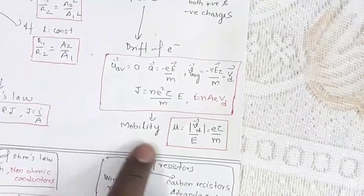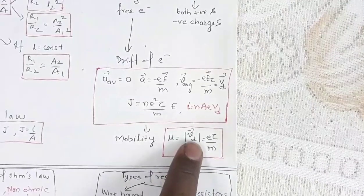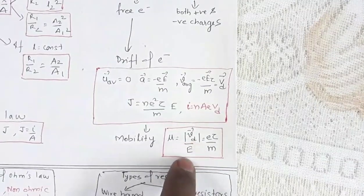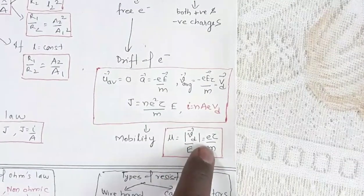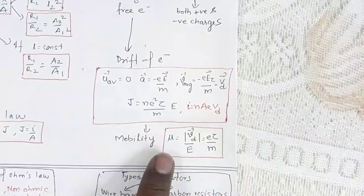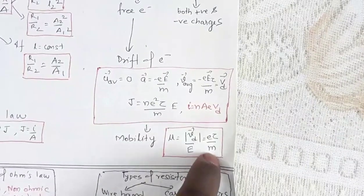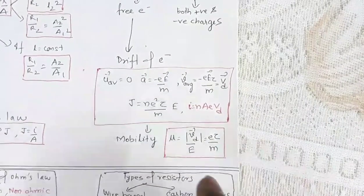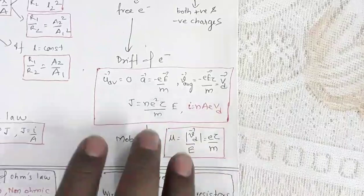Mobility of charge carriers is given by the magnitude of drift velocity per unit electric field, which equals eτ/m. Mobility is inversely proportional to mass — obviously, if mass is more, mobility will be less.